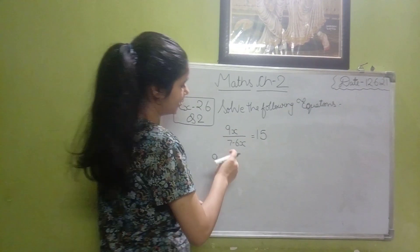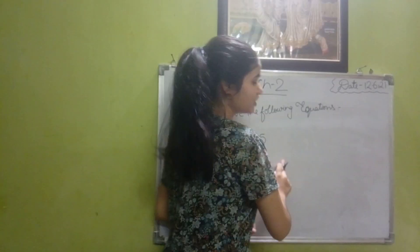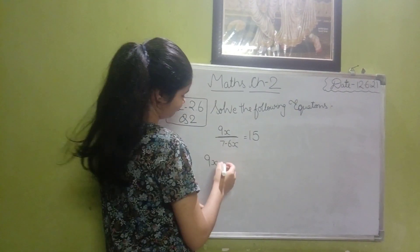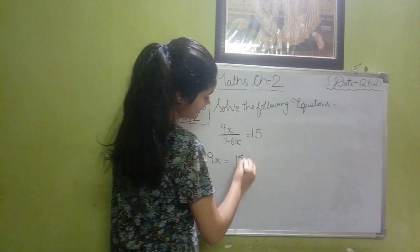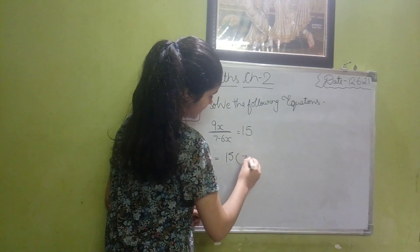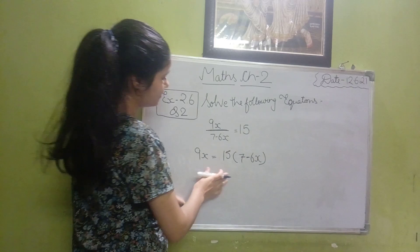9x, this is 7 minus x divided by... The right hand side will be multiplied by 15 to 7 minus 6x. Okay, let's solve the brackets.